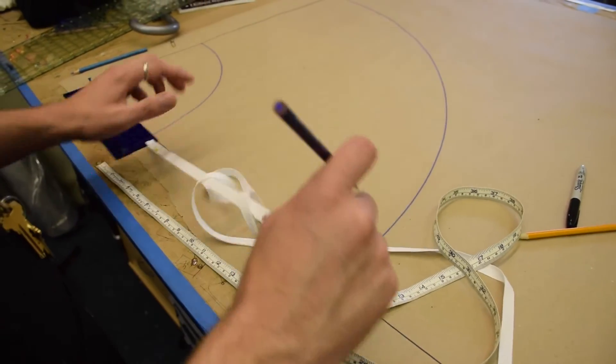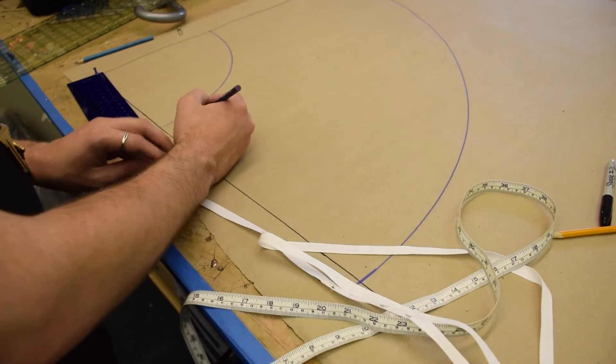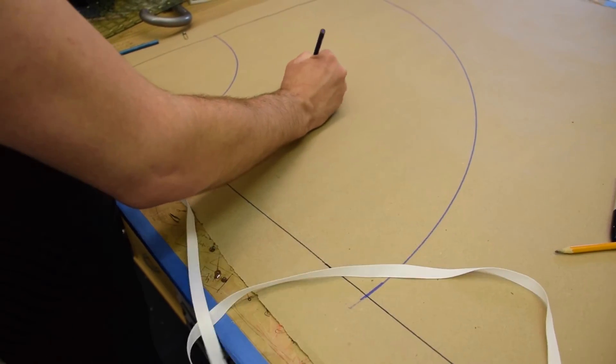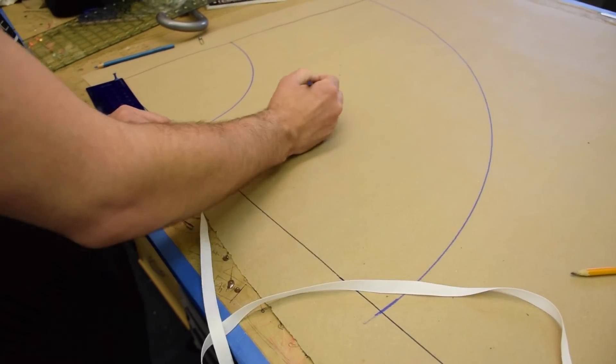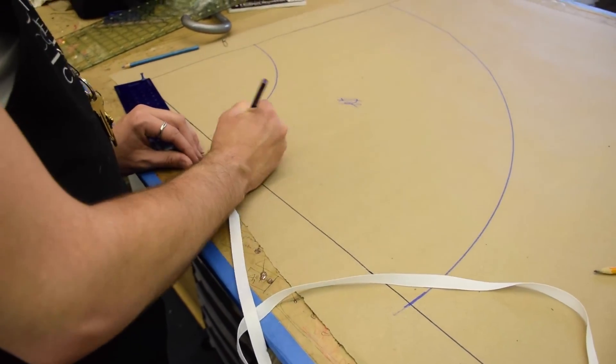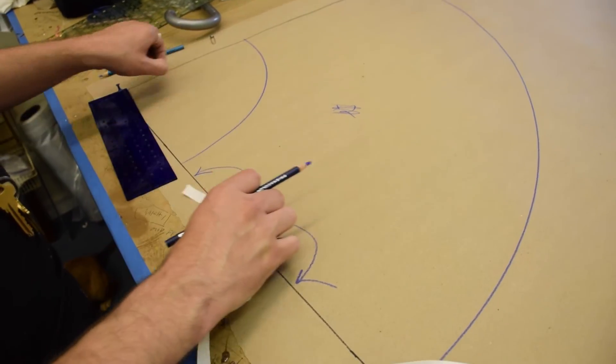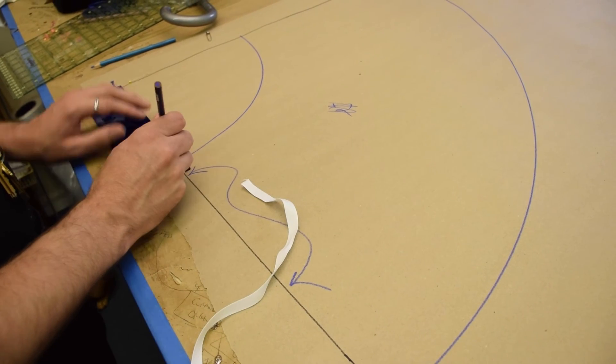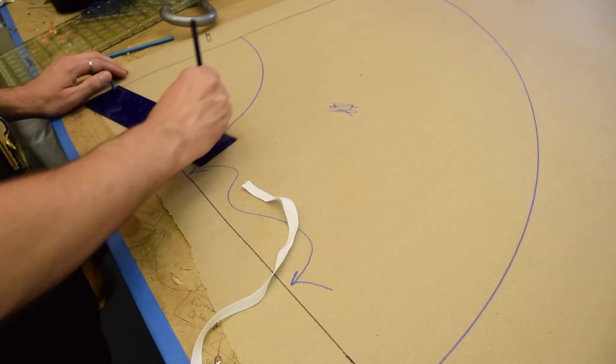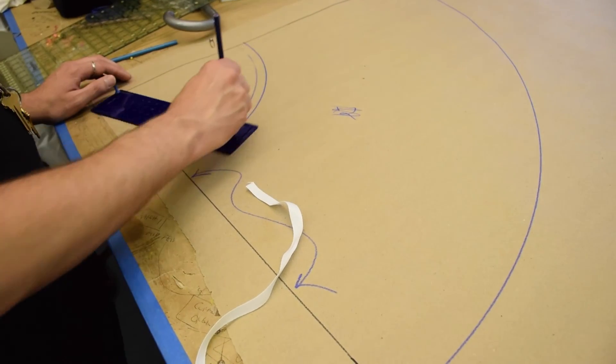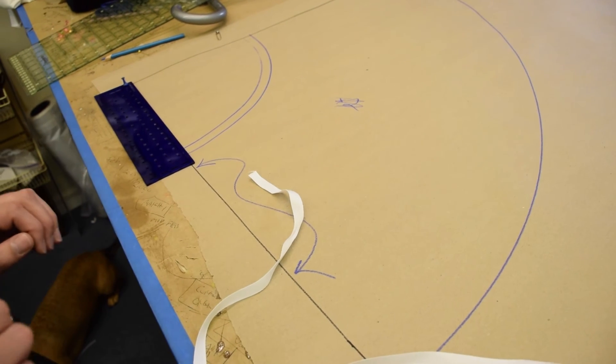So this is one half of a half circle skirt. So you could either cut this out times two pieces, or you could cut it with one piece on the fold. And you can also use the same circumference ruler to go ahead and mark in your seam allowance if you want right off the bat.